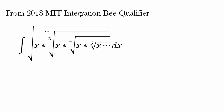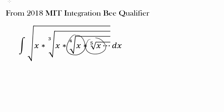We have square root of x, and inside we have cube root of x, and we have fourth root, fifth root of x, and in fact we have infinitely many of them. That's what this dot dot dot is telling us. How can we even start evaluating this thing that goes on infinitely?